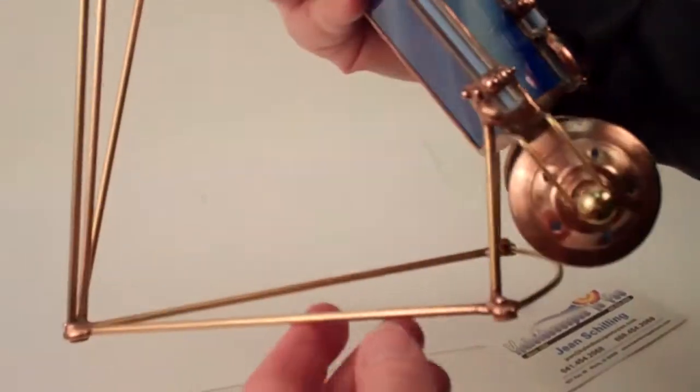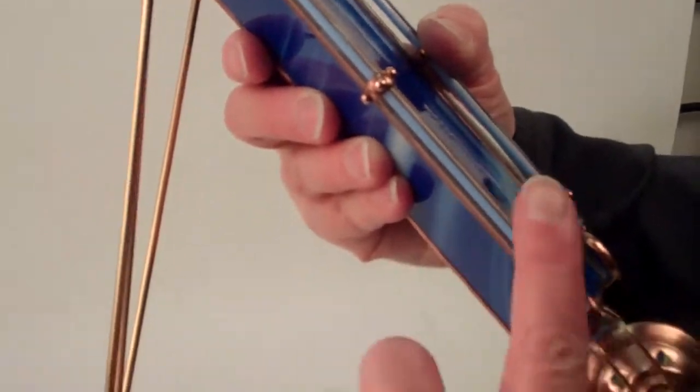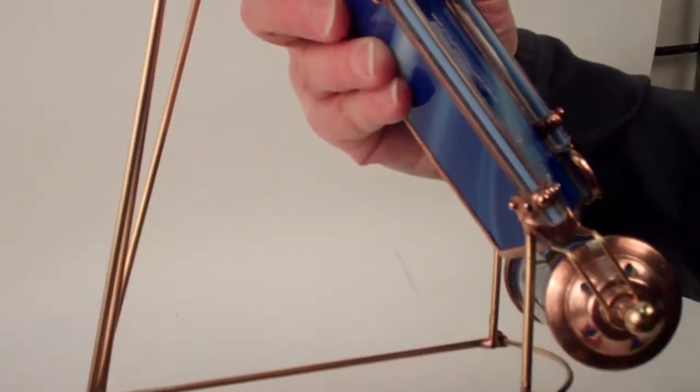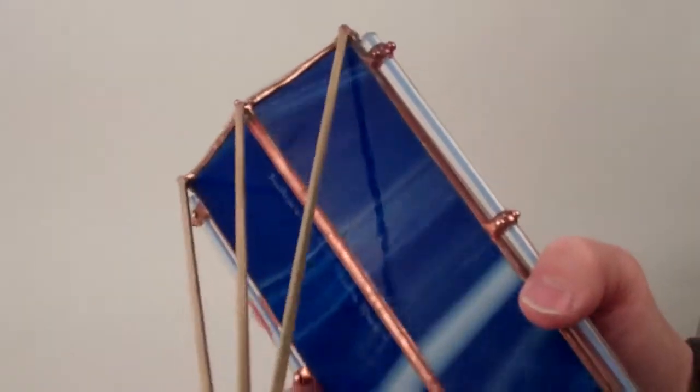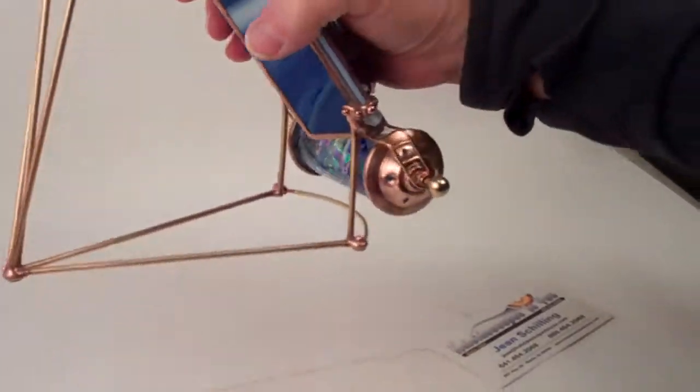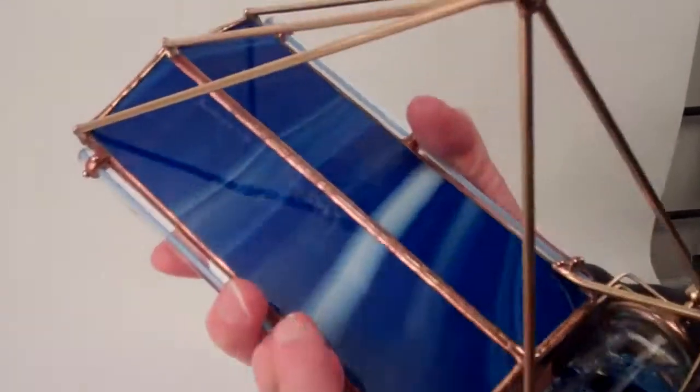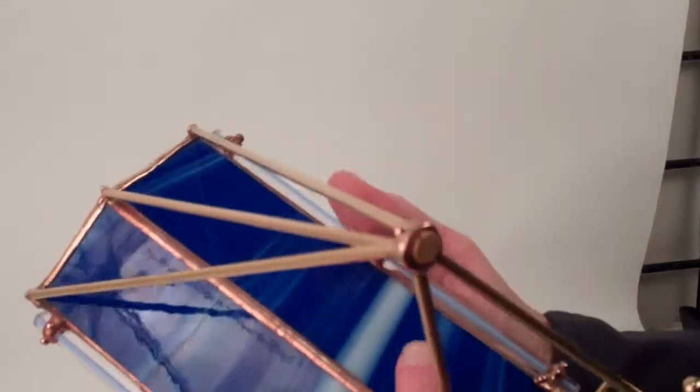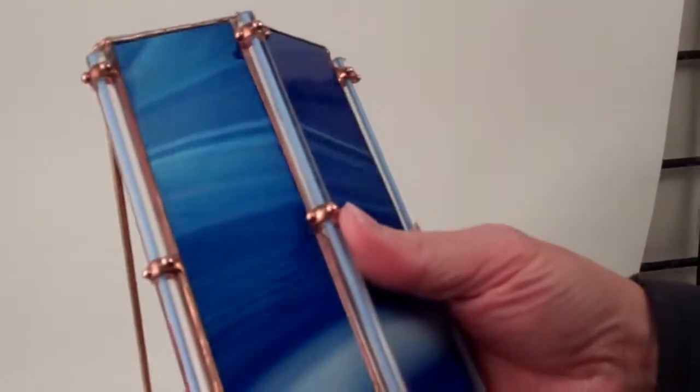The exterior of the kaleidoscope is built with traditional copper foil stained glass techniques. Brass rods and hand soldering create the pedestal portion and then the kaleidoscope itself is built with four panels of this beautiful cobalt and white stained glass.